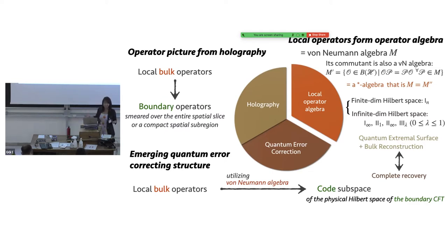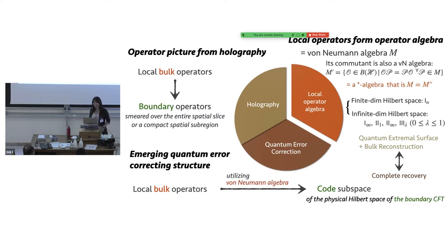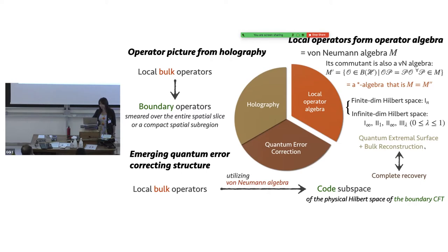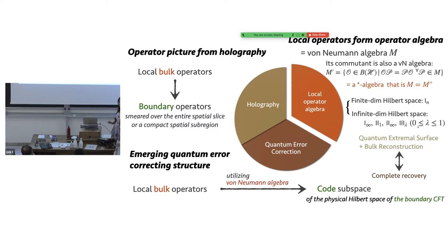From Ben's talk yesterday, people heard about a variety of different types from the von Neumann algebra perspective. Everyone can use very easily the finite dimensional perspective here, where n is just exactly the dimensionality. But there are many more infinite-dimensional Hilbert space admitting types of von Neumann algebras. Von Neumann algebra can never exist without an underlying structure of Hilbert space. This is why I'm focusing on the Hilbert space isometry as the explicit holographic map I'm going to utilize.